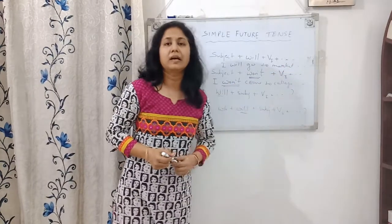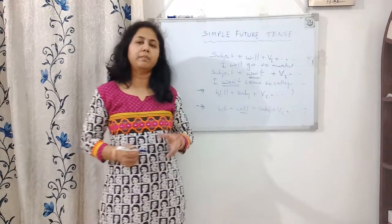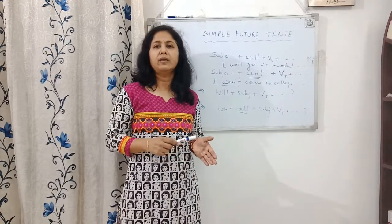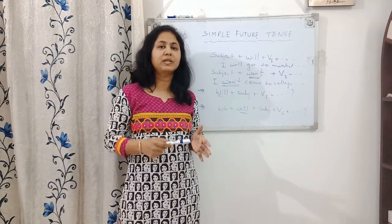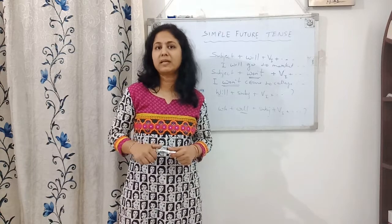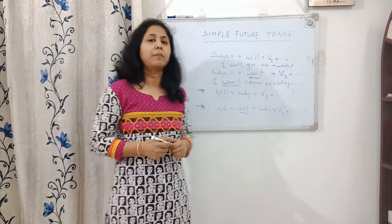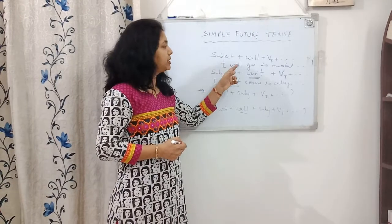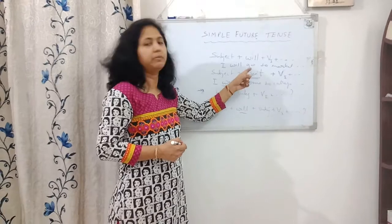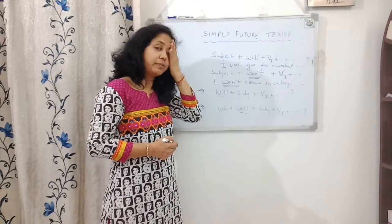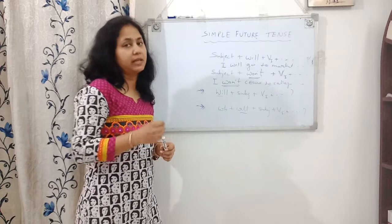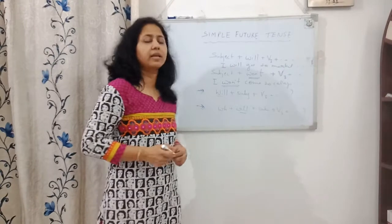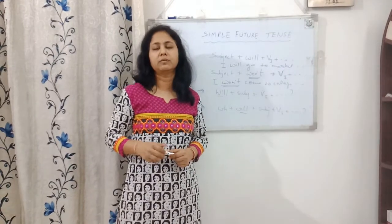Earlier, traditional grammar books said that 'shall' is used with 'I' and 'we' in future tense. But that is not so in today's English. Whether the subject is singular or plural, 'will' always comes after the subject, and then the verb will always be in its first form. Always remember: verb means action word.